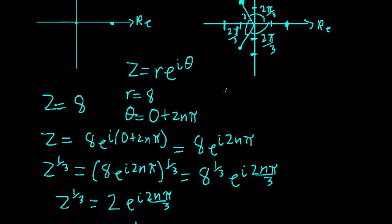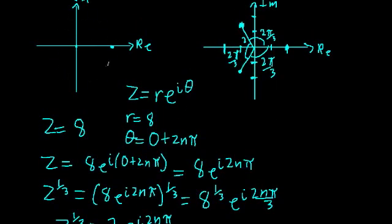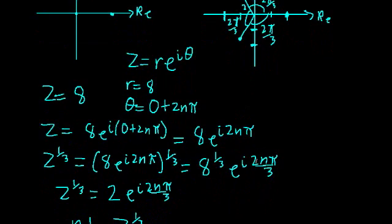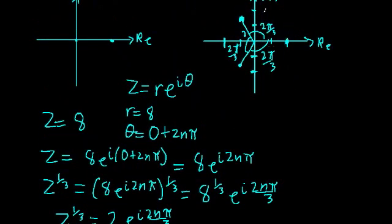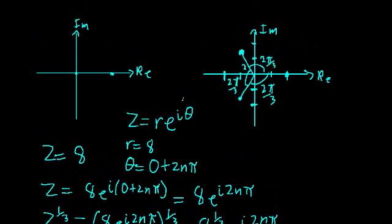Let's think about how we actually got three different solutions. It all goes back to our theta. We originally wrote theta as our initial angle — which was zero — plus 2n pi. The 2n pi meant we could go around one complete revolution and keep landing at the same point. But when we took the cube root, our angle changed to 2n pi over 3 — meaning for every integer n, we're going only a third of the way around. A third of the way for a cube root. And we'll find a fourth of the way for a fourth root, a fifth for a fifth root, and so on — all points equally spaced by 2 pi over n, where n is the order of the root.